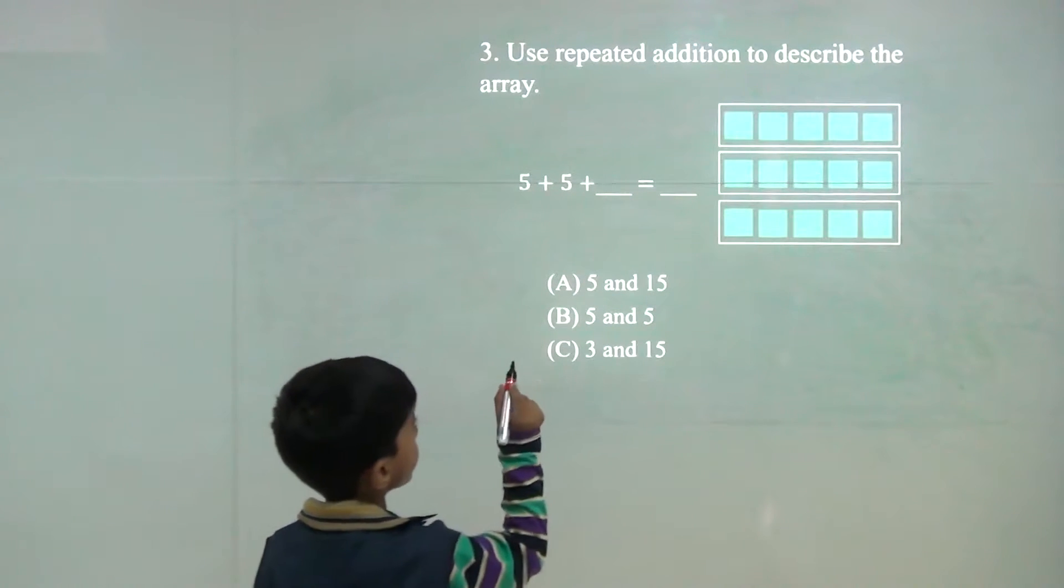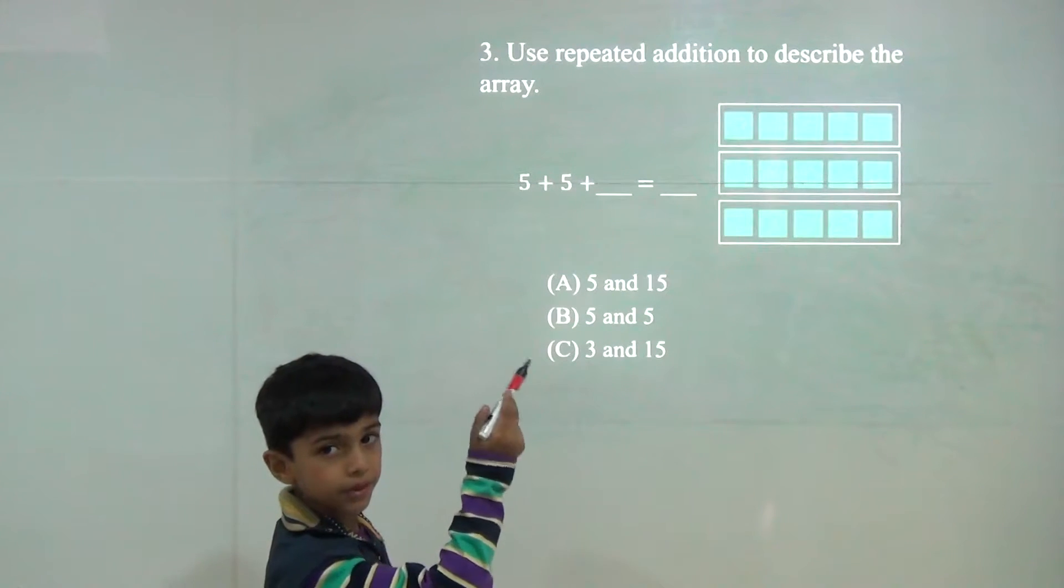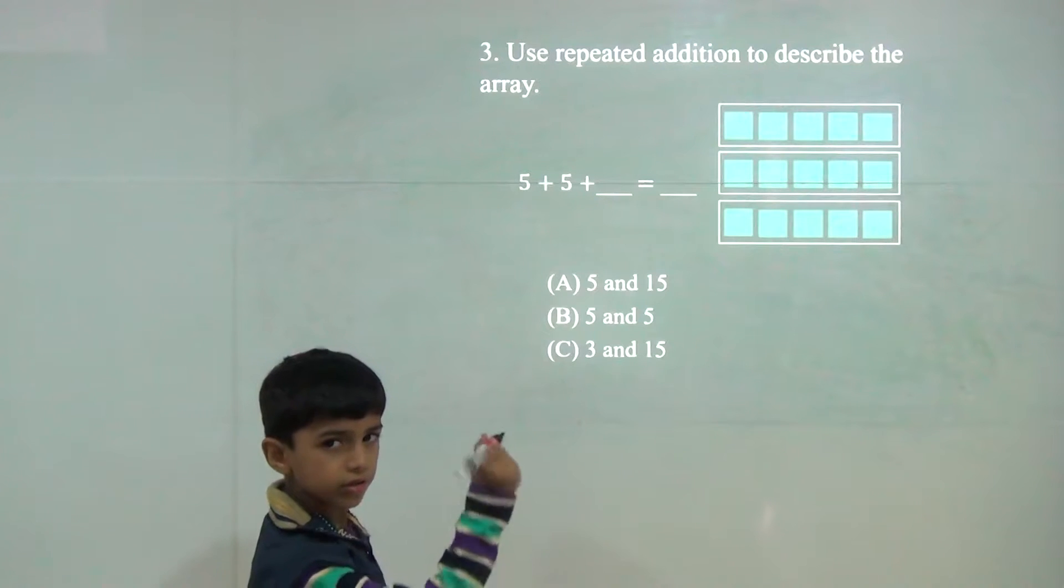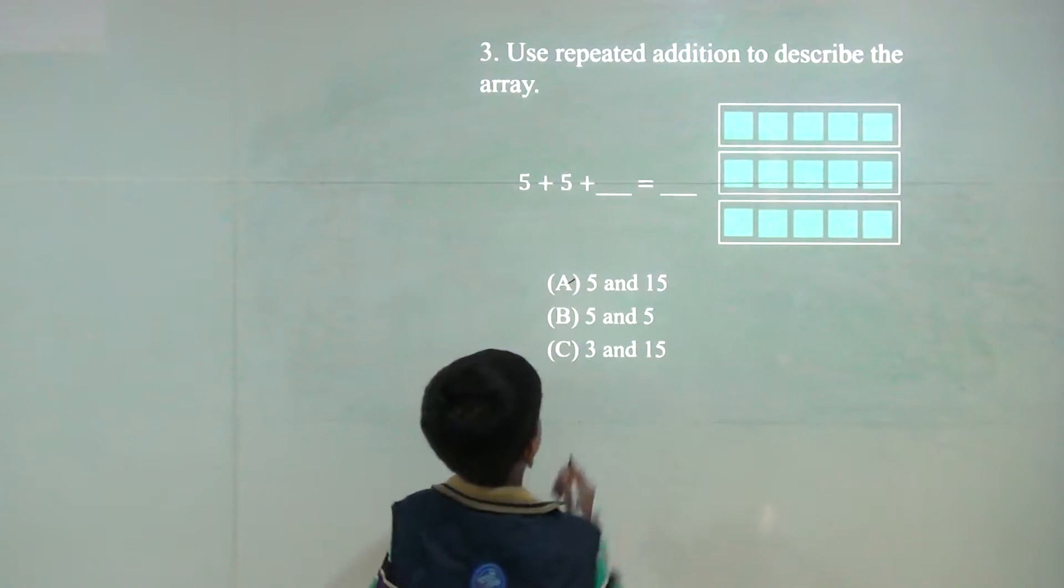B. 5. 5 plus 5 plus 5. Now 5 plus 5 would be 10 and plus 5 would be 15. So 5 and 15.